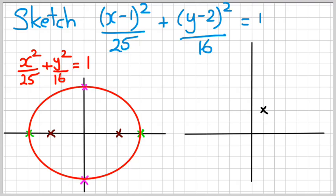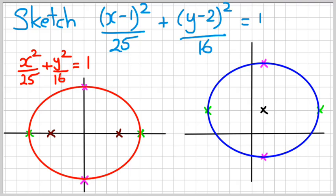From the new center, the a value is still plus or minus 5, so I go five across to the right and five to the left for my two a values. For the b values, I go four to the top and four to the bottom — there's the outline of my ellipse. The two foci are still three units away from the center, so the foci are three units to the right and three units to the left of the new center. This is basically just movement of the center for ellipses.